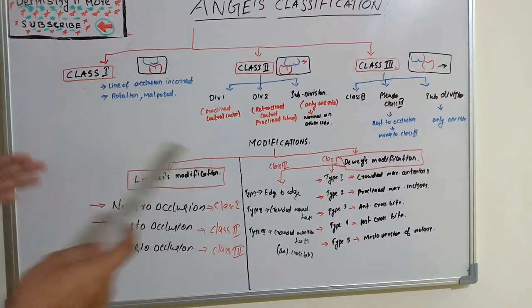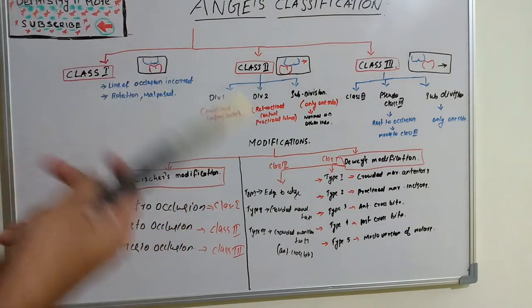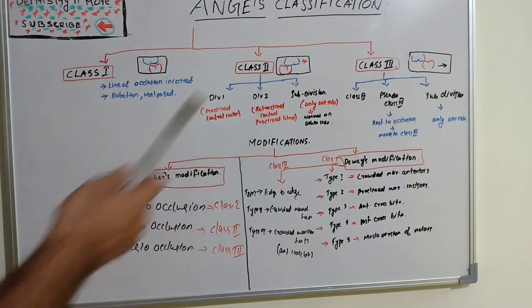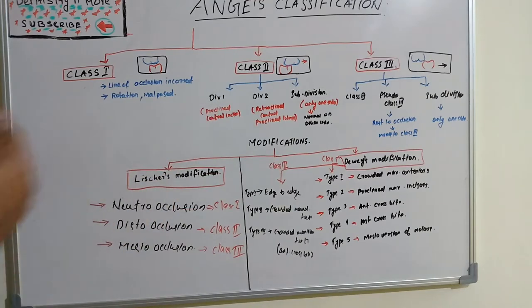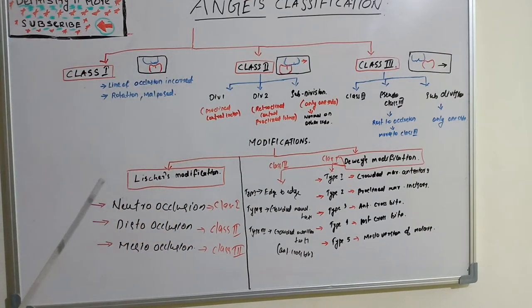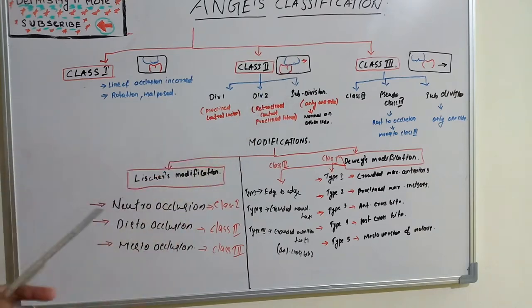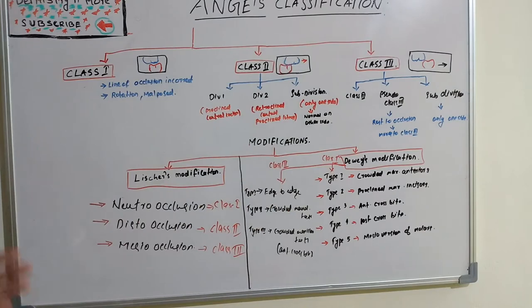Class 2 has three types: Division 1, Division 2, and Subdivision. Division 1 is the basic proclination of upper teeth — most of the teeth will be proclined. Division 2 is different: retroclined central incisors and proclined lateral incisors. In Division 1, mostly the central incisor is proclined, but in Division 2, it is the lateral incisor that is proclined. Division 2 is mostly a skeletal Class 2.